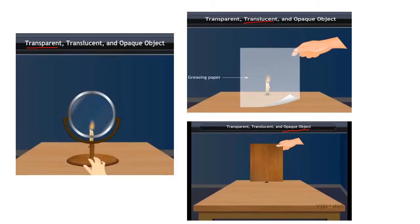According to how light passes through objects, we can classify objects as transparent objects, translucent objects, and opaque objects. Transparent objects are objects that allow light to pass through them. For example, glass is a transparent object — you can see a lighted candle clearly through glass because light passes through it clearly.